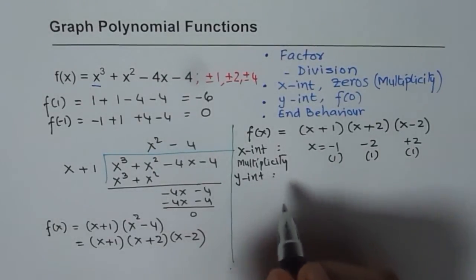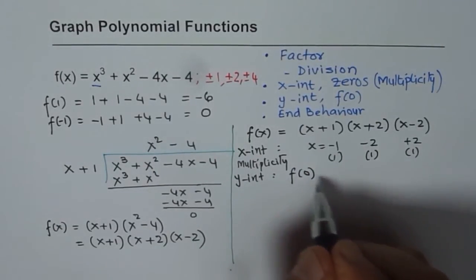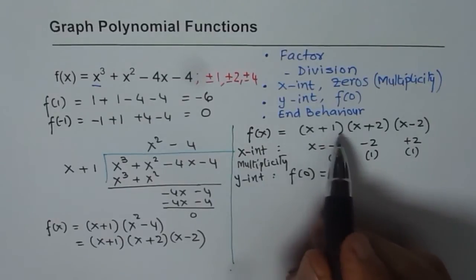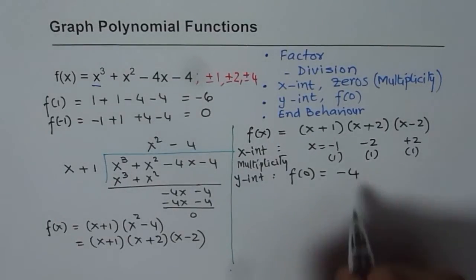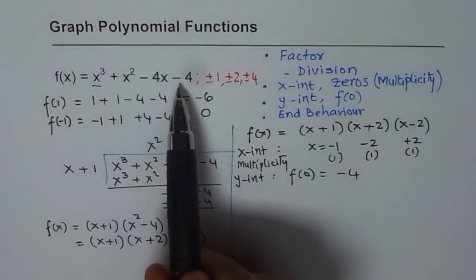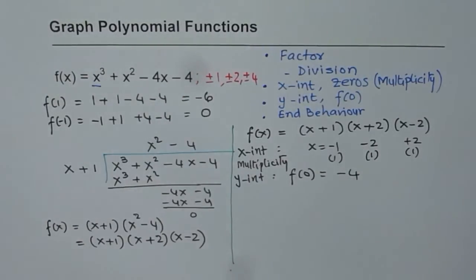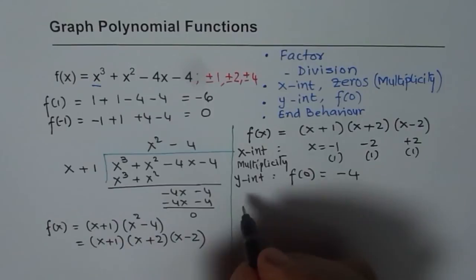So y-intercept is f(0). If I plug in 0 here I get 1 times 2 times minus 2 which is minus 4. When the equation is given in standard form the constant is your y-intercept. So we get y-intercept. Now we will explore the end behavior.